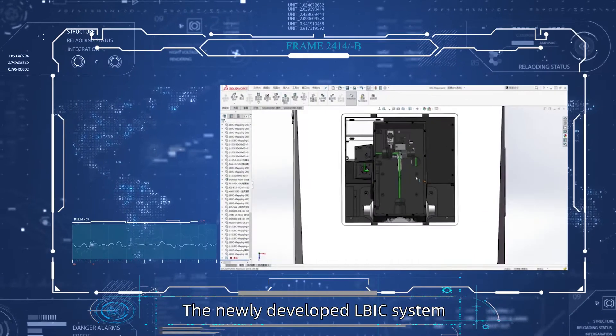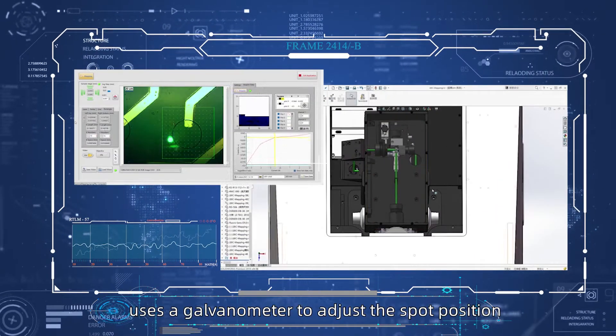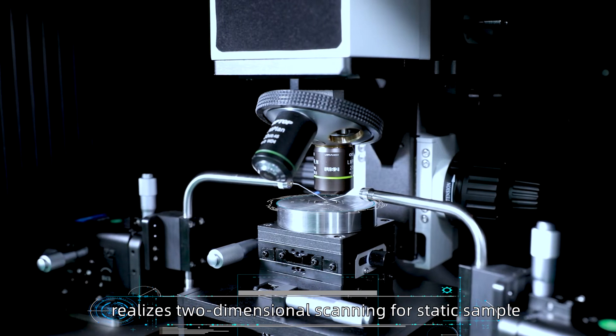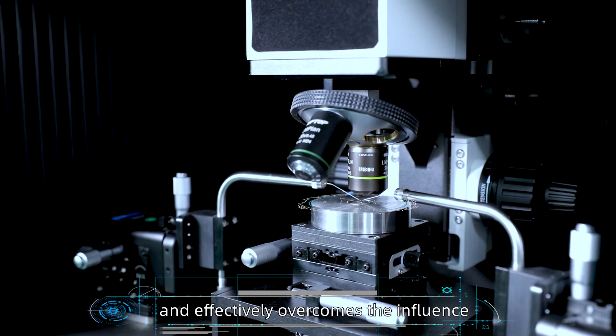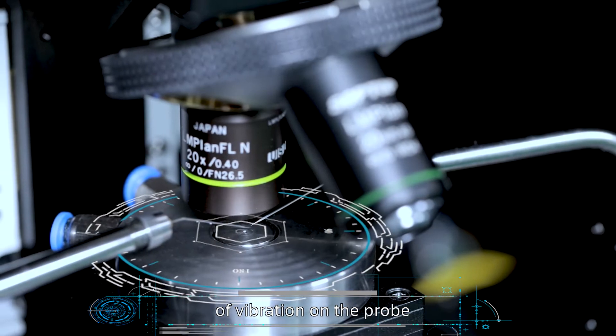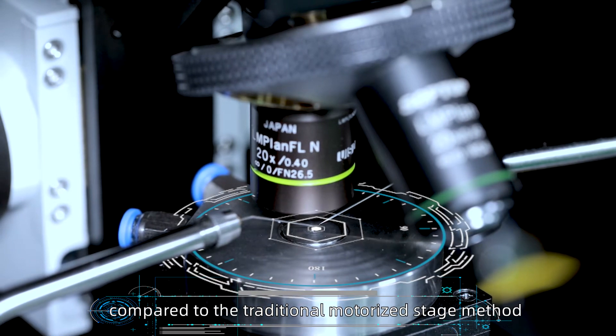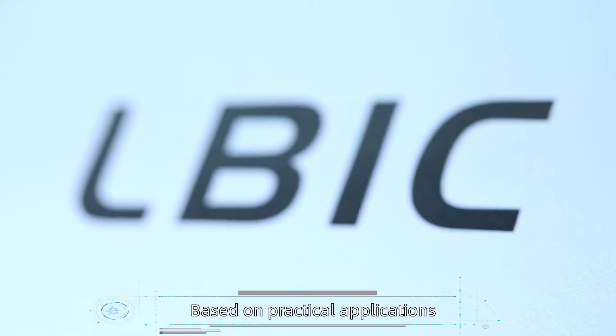The newly developed LBIC system uses a galvanometer to adjust the spot position, realizes two-dimensional scanning for static samples, and effectively overcomes the influence of vibration on the probe compared to the traditional motorized stage method.